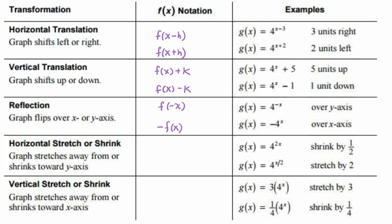Reflection occurs so that it looks as f of negative x or negative f of x, and can occur either in the exponent or not in the exponent, depending on which axis you are reflecting across.